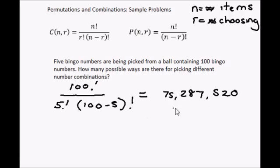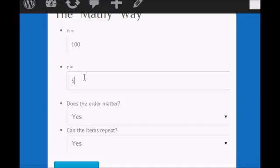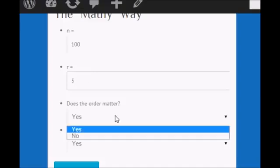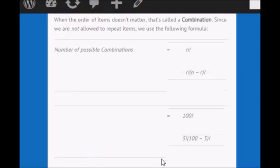Now if you want to check that your calculation is correct, you can go to our website, StatisticsHowTo.com and we have got a combinations calculator there. So my n for that question was 100, my r was 5. The order does not matter because these are bingo balls. The items cannot repeat because when you take out a ball it is not going to be replaced. Click Calculate. And if we scroll down we can see the solution there.